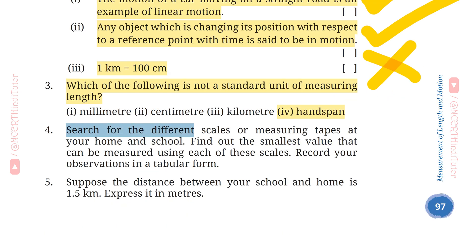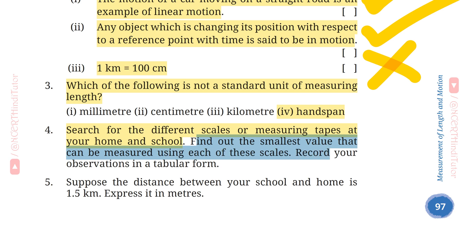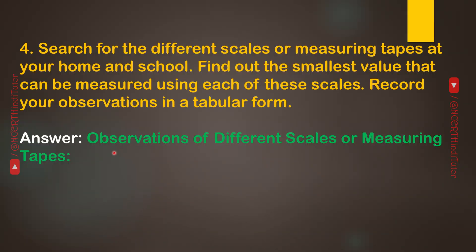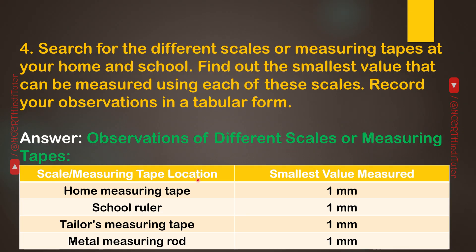Question 4: Search for different scales or measuring tapes at your home and school. Find out the smallest value that can be measured using each of these scales and record your observations in a tabular form. Answer — Observations: Home measuring tape: 1mm. School ruler: 1mm. Tailor's measuring tape: 1mm. Metal measuring rod: 1mm.